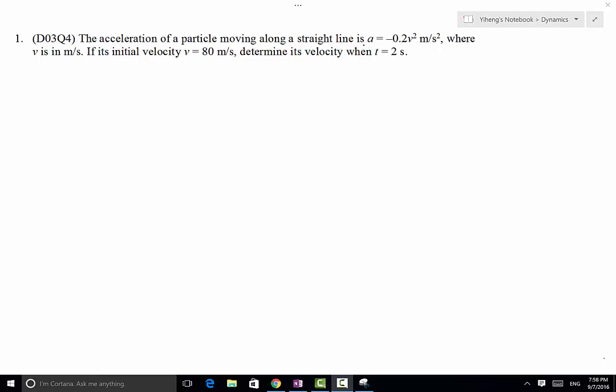In this problem we have a particle moving along a straight line. Its acceleration is given as a function of velocity. If its initial velocity is 80 meters per second, we need to determine its velocity when t is 2 seconds.